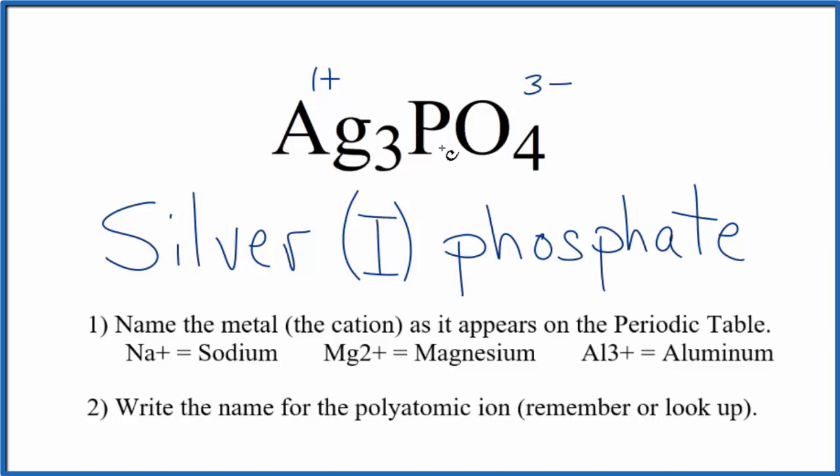So the name for Ag3PO4 could be silver(I) phosphate, and you'll also see just silver phosphate quite frequently.